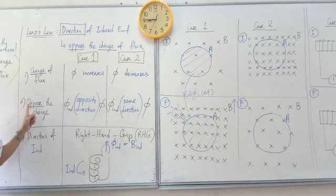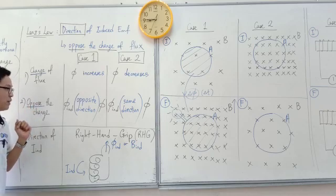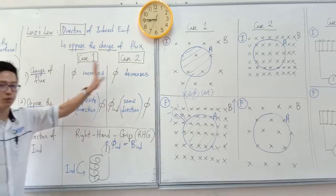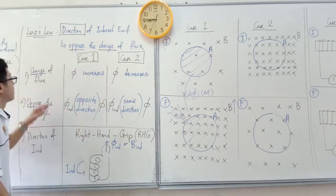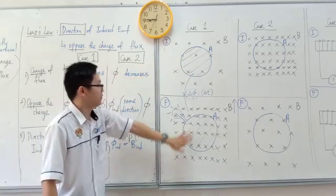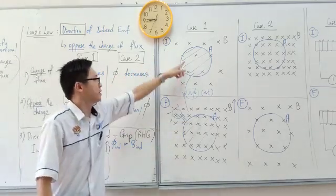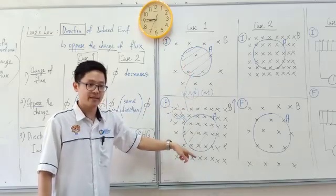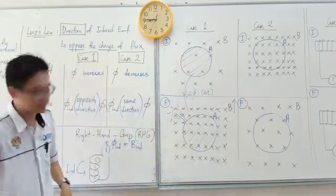After that, we must oppose the change of flux. What does it mean? Here are two cases — I will explain in detail. In the first case, the flux has increased, isn't it? Flux has increased.